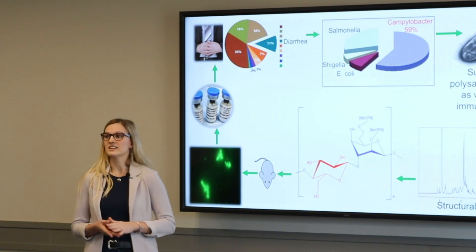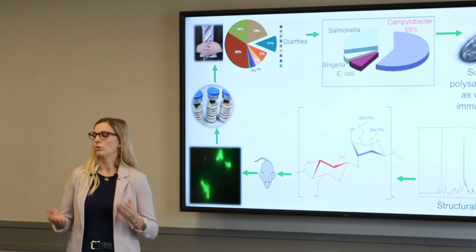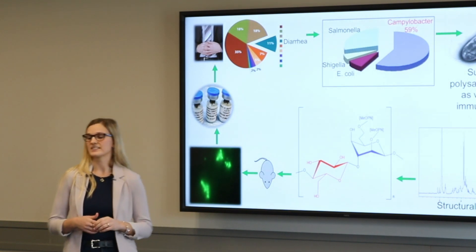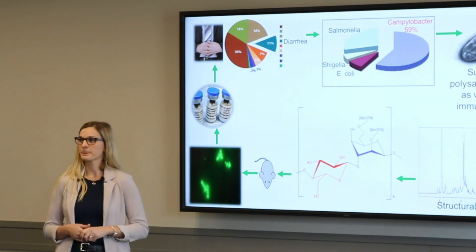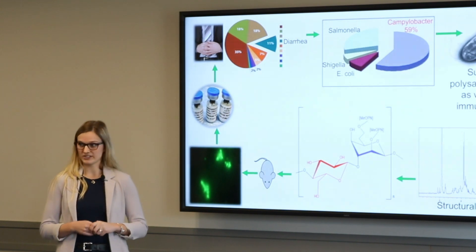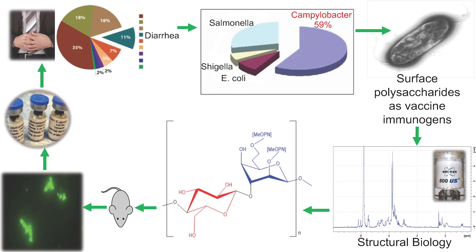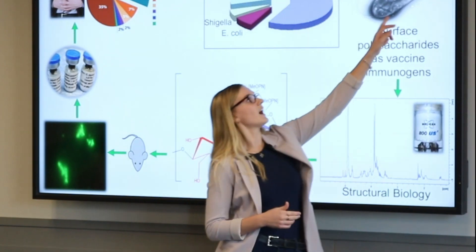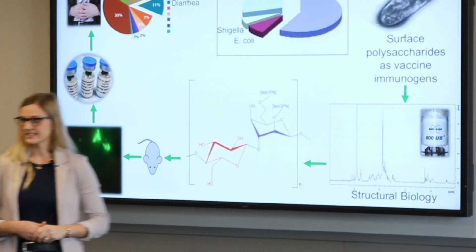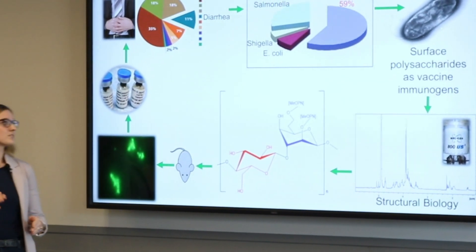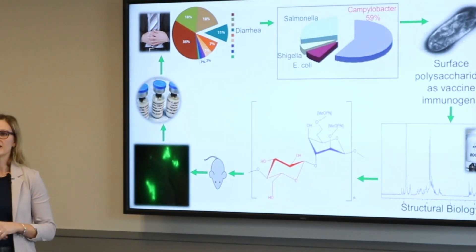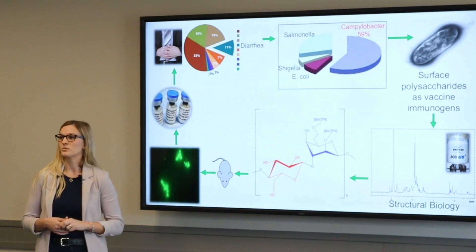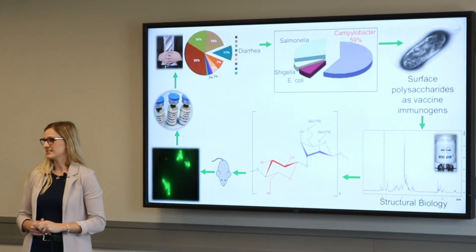To make my vaccine, I do not use the whole organism, but rather a specific unit — the sugars present on the outer surface. Each Campylobacter cell expresses species-specific cell surface polysaccharides as an outer coating. These polysaccharides are chains of sugars linked together that can interact with the immune system, and since they do this, we can make a vaccine using these sugars.